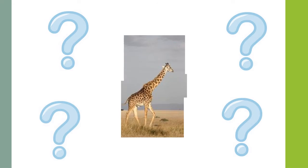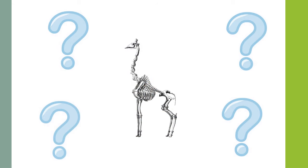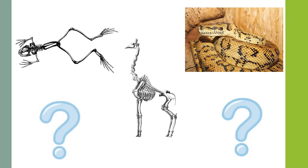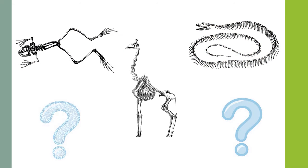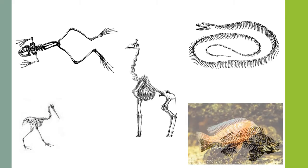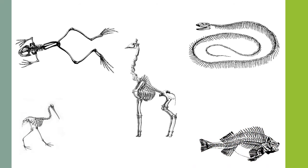Types of vertebrate can be placed into five groups including mammals, amphibians, reptiles, birds, and fish. All of these animals have backbones and can be identified as vertebrate animals.